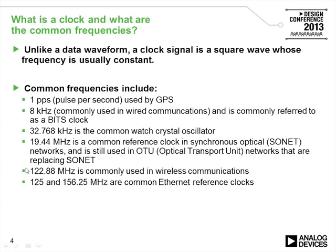So what is a clock and what are common clock frequencies? A clock signal is a square wave. The frequency is usually constant. Generally one edge of the clock will be used in a D-to-A or an A-to-D converter to actually be the instant to either sample an analogue signal or the instant to output an analogue signal from a D-to-A converter.